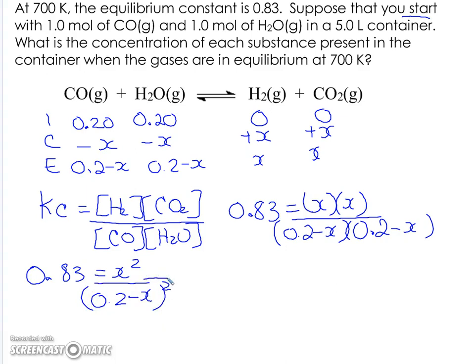So solving for X isn't that much of a challenge. Don't freak out here. You don't need the quadratic equation. Just understand that if I square root everything, it'll make it easier to solve for X. So if I square root, I'll get square root of 0.83 is equal to X divided by 0.2 minus X.